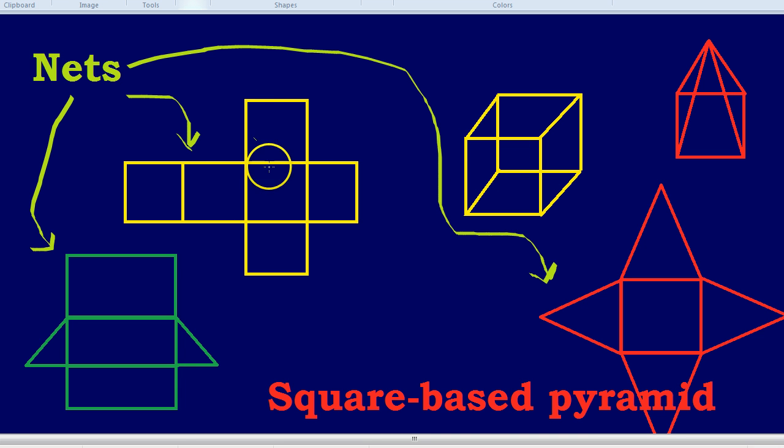If you fold up the net in yellow, you actually form the cube you can see on the right. How does that work? Well, this central square would be the floor. These 4 squares around it would be the sides. So here's the floor of the cube, and then you've got the 4 sides here and here. And then finally you've got the roof over here, which is now the roof of the cube.